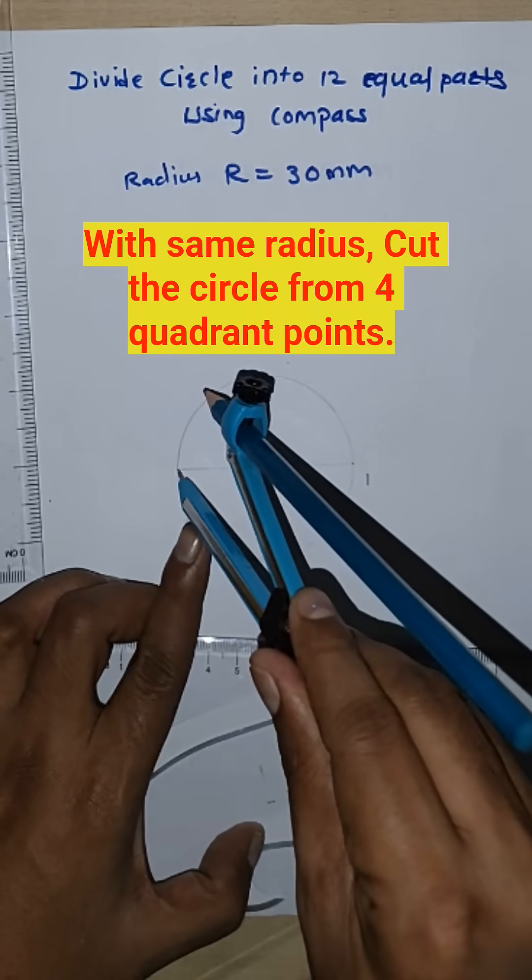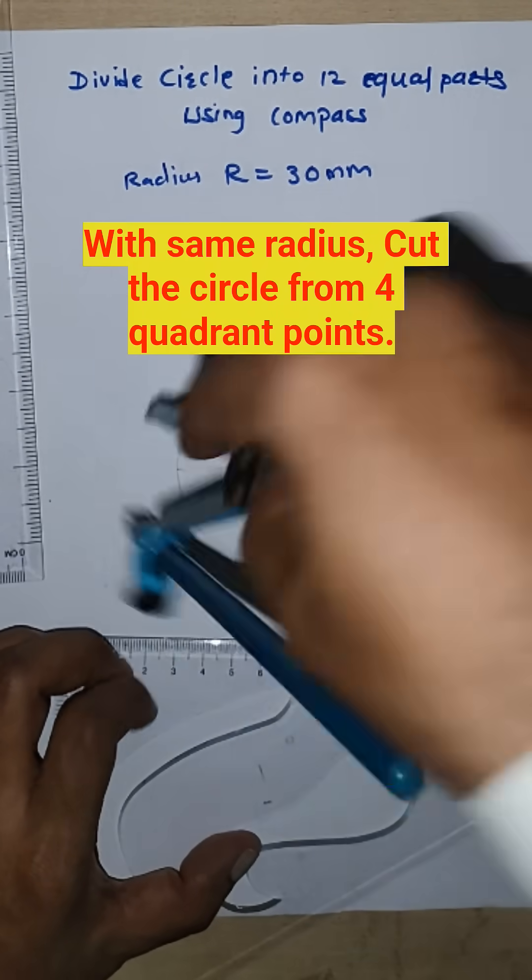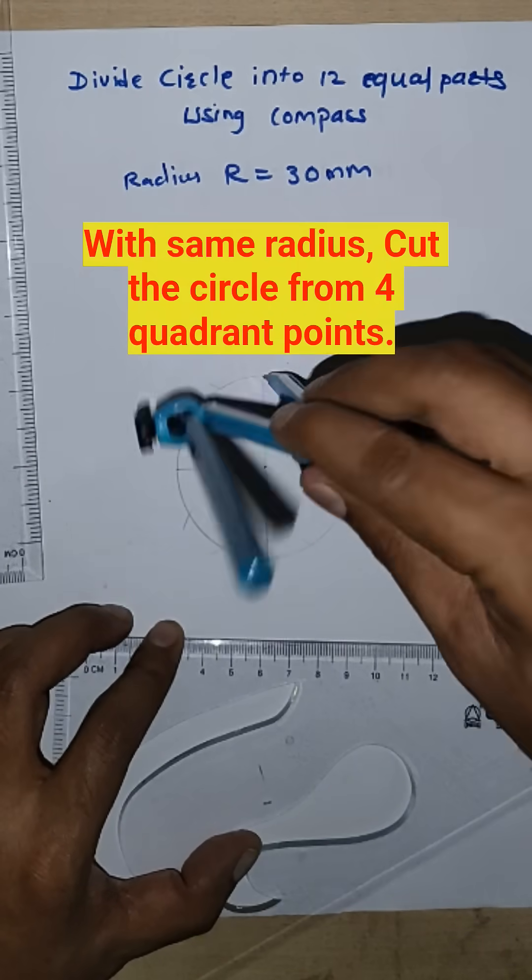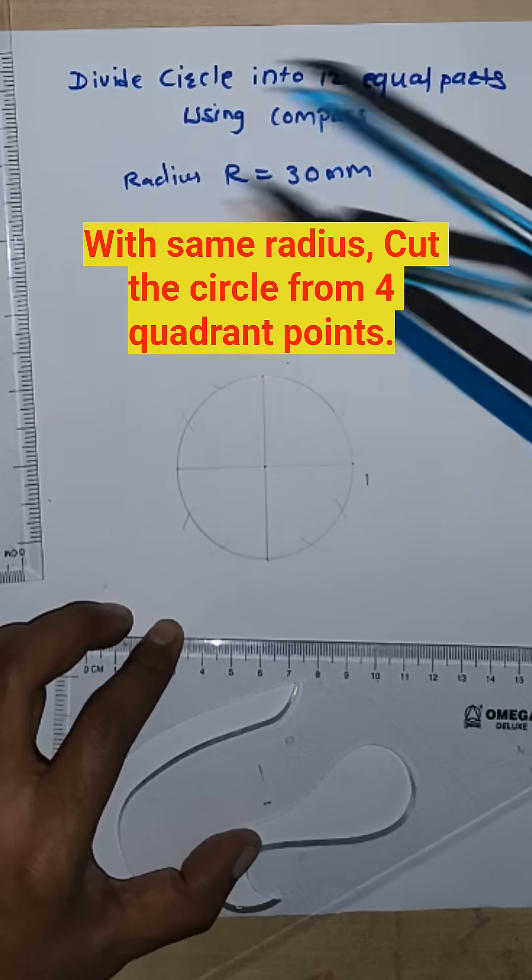From this point, cut this point and this point. From this point, cut this and cut this circle here.